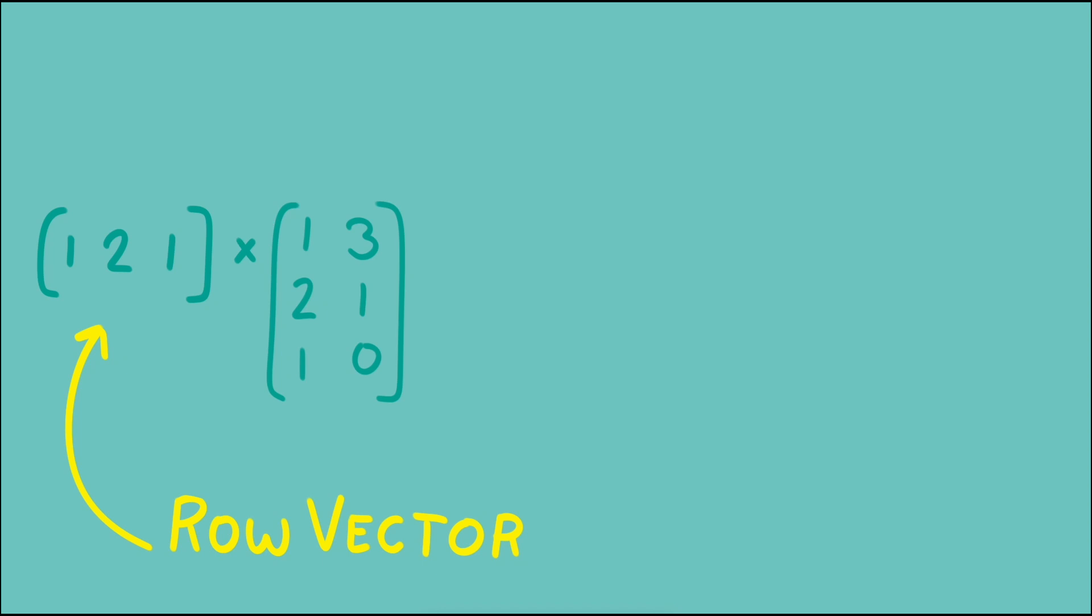When your first matrix only has one row we call it a row vector and the result of the multiplication between the two, so long as the matrix you're multiplying by has as many rows as the vector has entries, will also be a row vector.